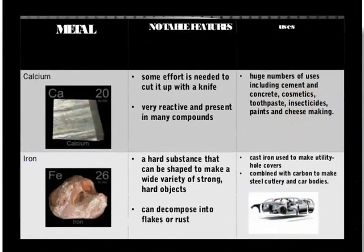Calcium: some effort is needed to cut it with a knife, very reactive and present in many compounds. Uses include making cement, concrete, cosmetics, toothpaste, insecticides, paints, cheese, etc. Iron: a hot substance that can be shaped to make a wide variety of strong and hard objects, can decompose into rust, and is used for industrial purposes. Combined with carbon, it is used to make cutting tools and car bodies.